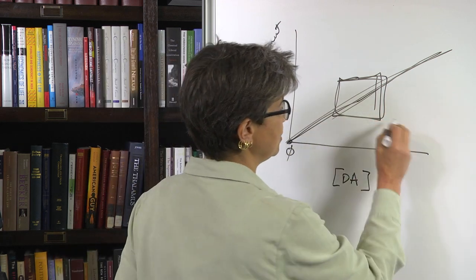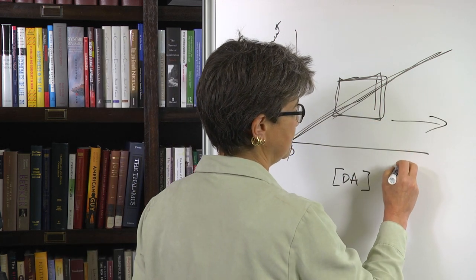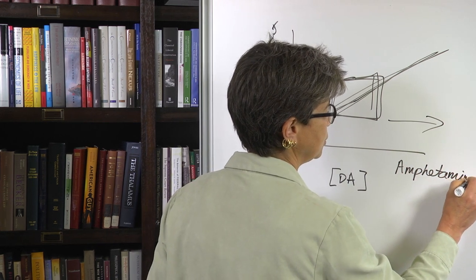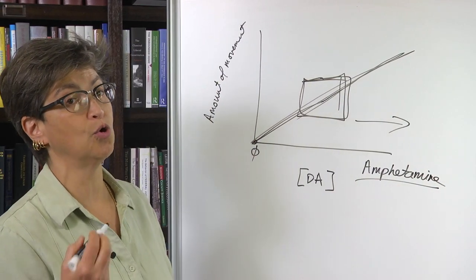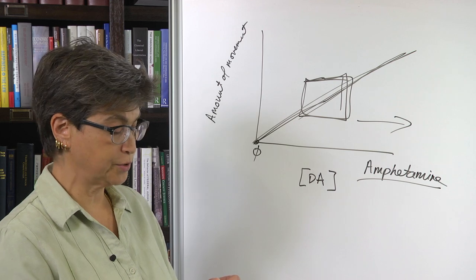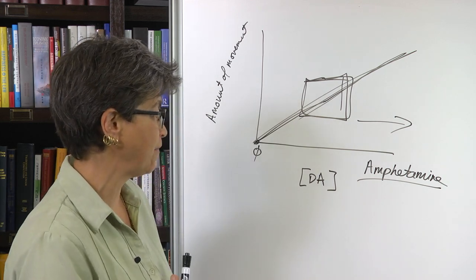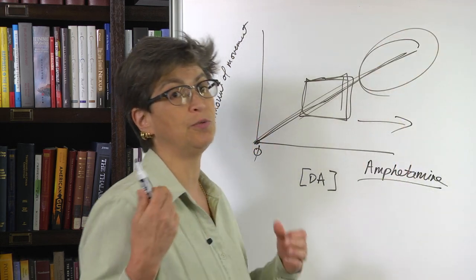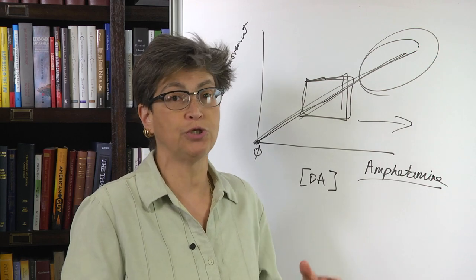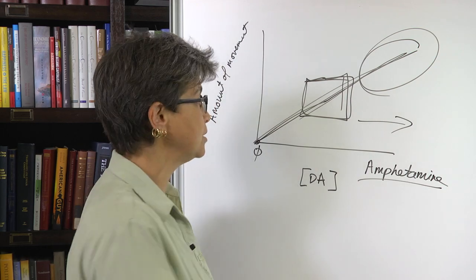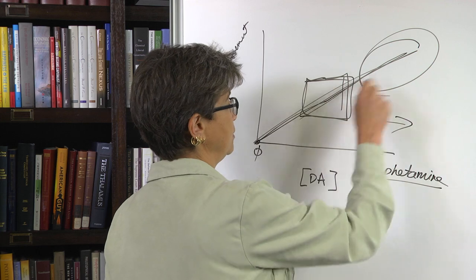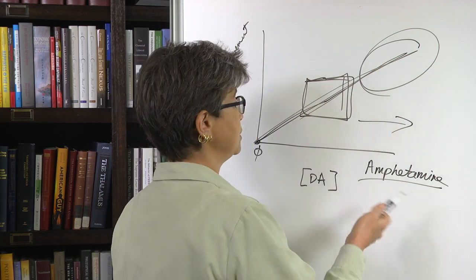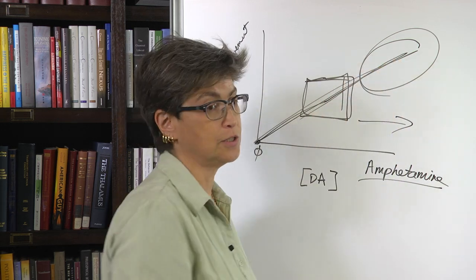But then what happens up here? Let's imagine that a person takes an amphetamine drug, which has the effect of releasing more dopamine. In that situation, there's more movement. The person appears to be always in constant motion, very jumpy. This is the reason why you're seeing this curve in action when you see a person on amphetamine, on some version of speed.